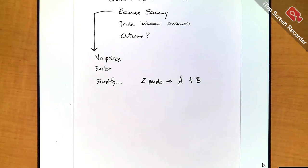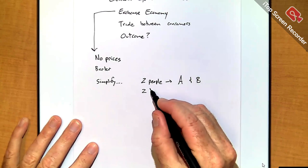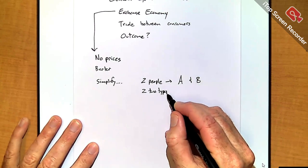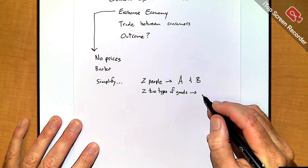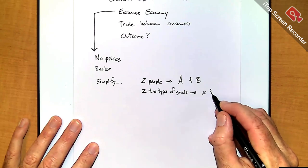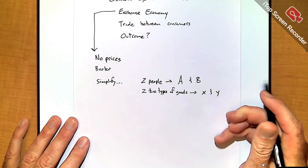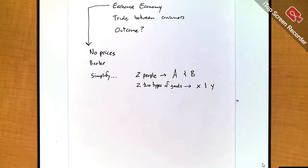We've taken millions of people and now we only have two, just to make it easy. Now we have millions of types of products — grapes, chickens, milk, computers, barbed wire fence, pencils — we're going to make that easier too and assume there are only two types of goods: X and Y. So I have my two people and two types of goods, and that'll be my exchange economy.